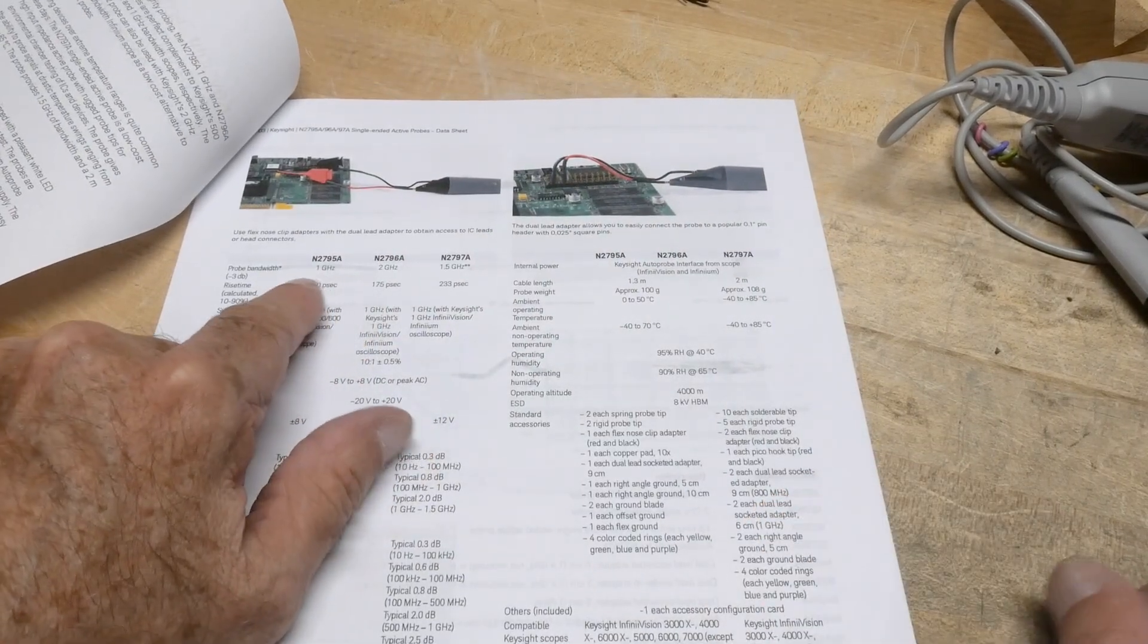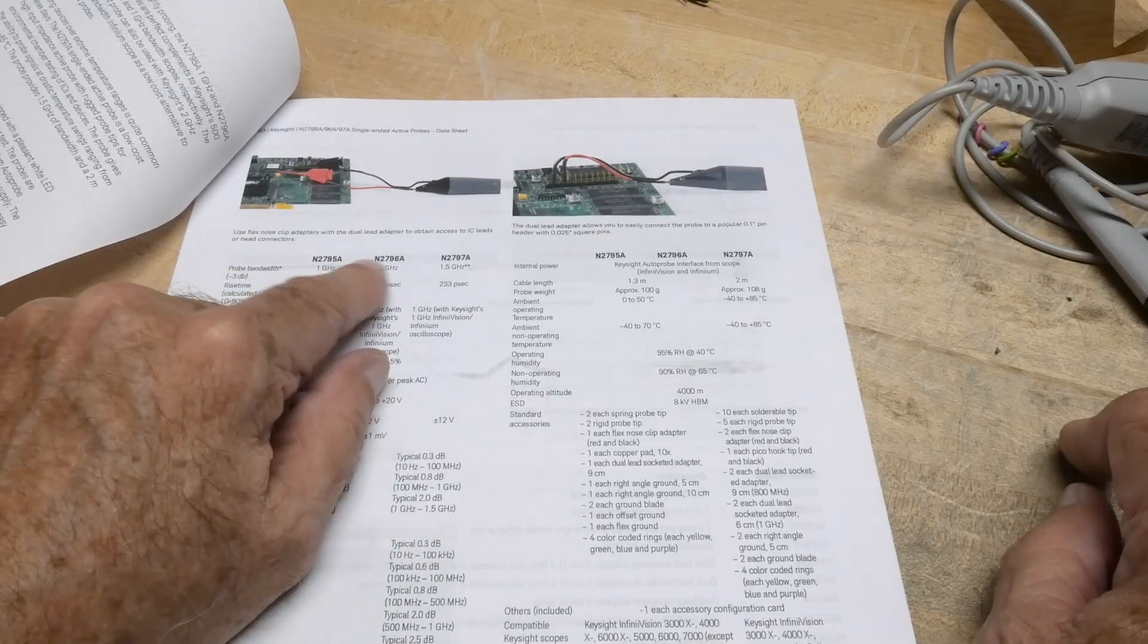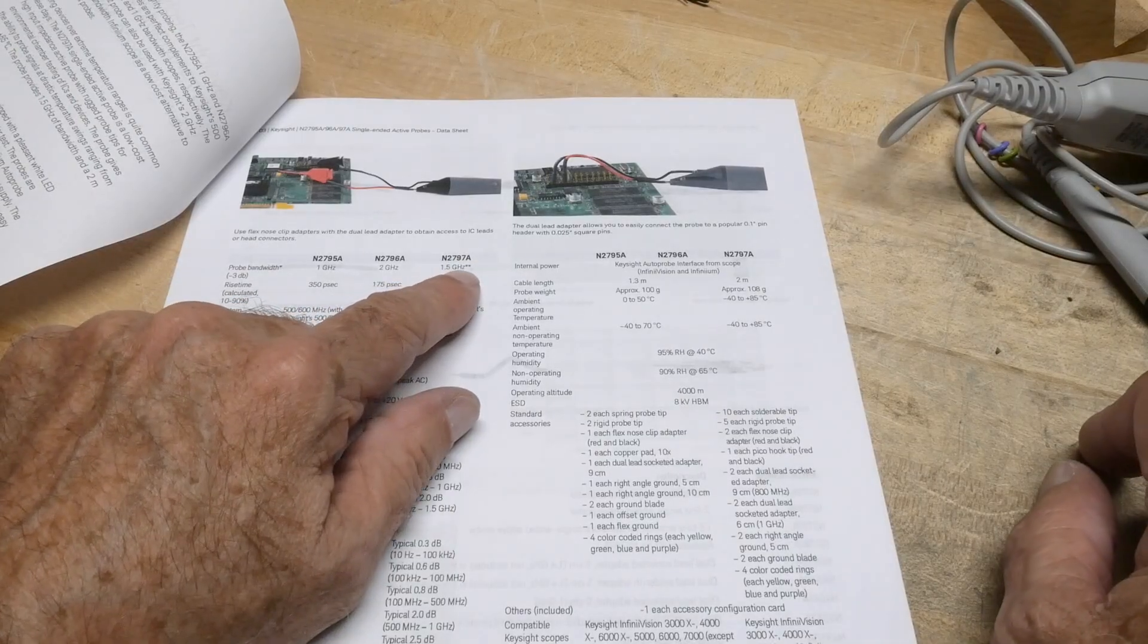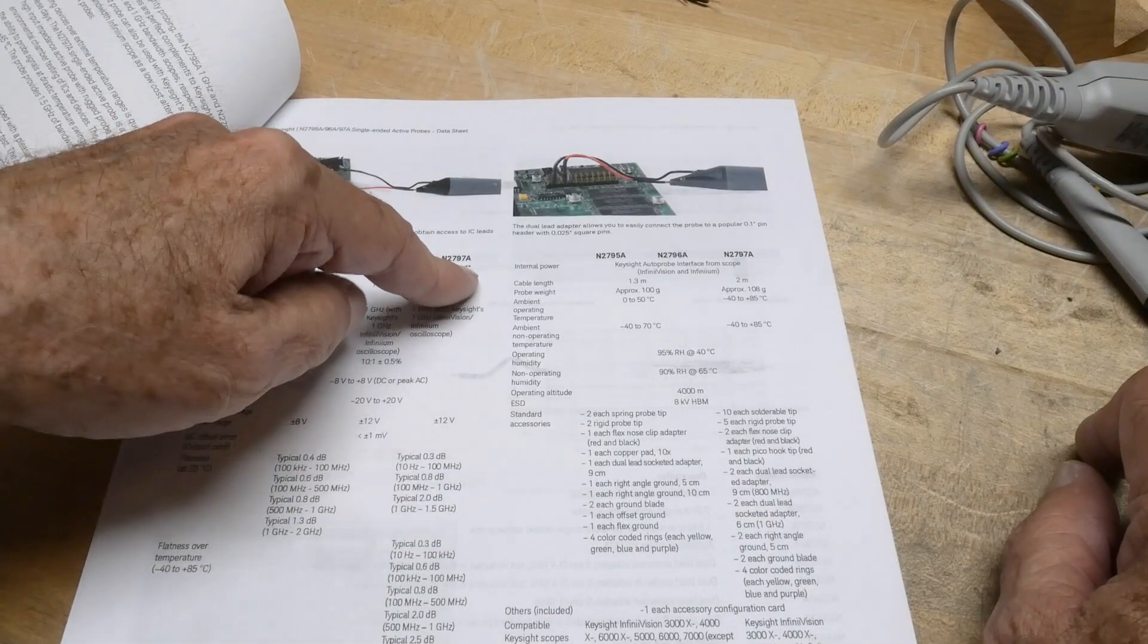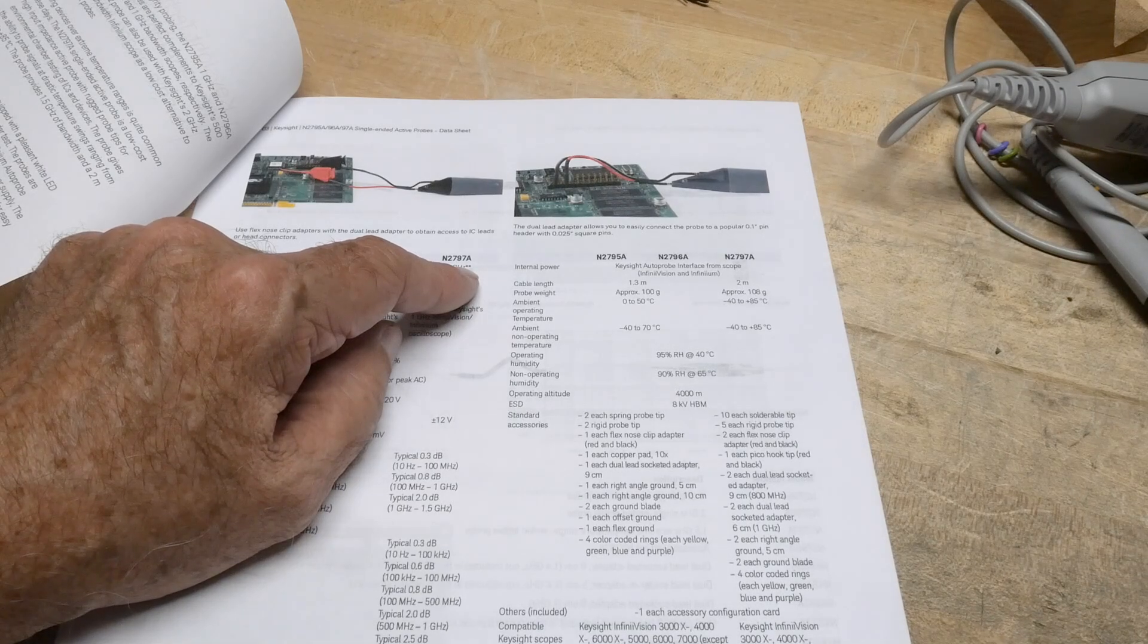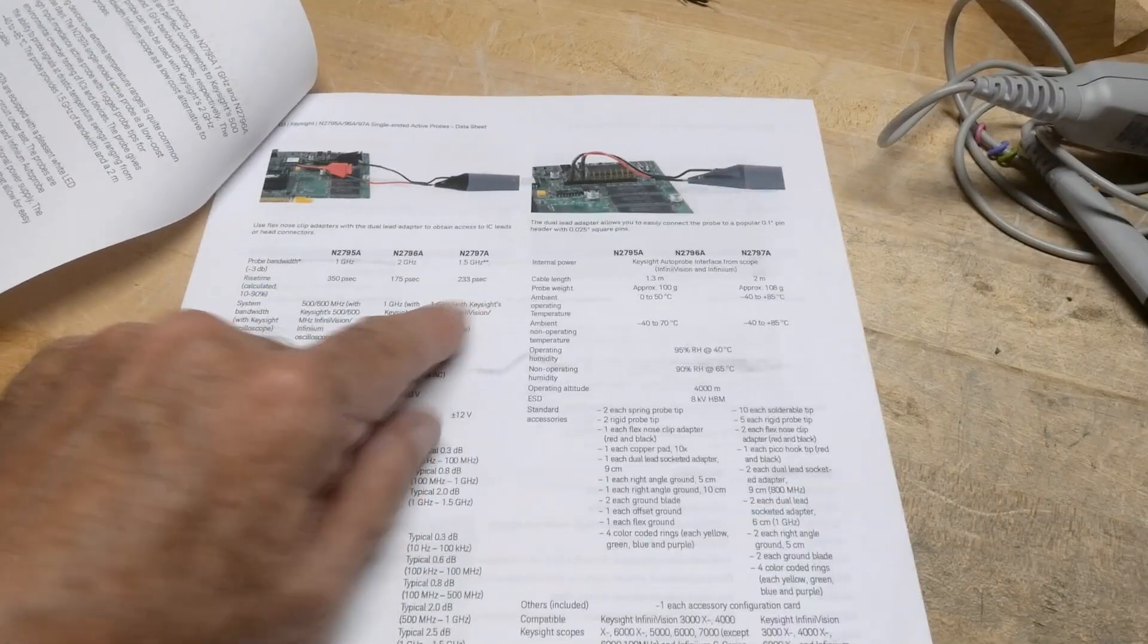So the difference is the one that I have, the 95, is a 1 gigahertz probe, the 96 is a 2 gigahertz probe, 97 is a 1.5 gigahertz probe, star star, typically 2 gigahertz when used with rigid probe tip ground plane and handheld. So different things.